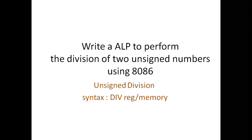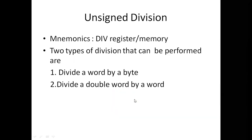The mnemonic used to perform the division of two unsigned numbers is DIV, register or memory. There are two types of divisions that can be performed: one is divide a word by a byte (16 by 8 bit division), and divide a double word by a word (32 by 16 bit division).